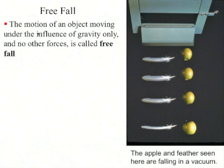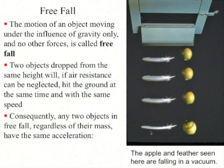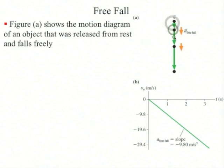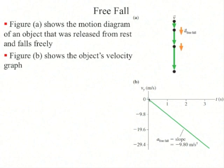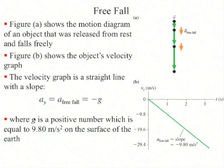The motion of an object under the influence of gravity only is called freefall. Two objects dropped from the same height will, if air resistance is neglected, hit the ground at the same time and with the same speed. There's an image of an apple and a feather falling inside a chamber from which all air has been pumped out, and the motion diagram shows they fall at the same rate. Two objects in freefall, regardless of their mass, always have the same acceleration — 9.8 meters per second squared vertically downwards. The velocity versus time graph for an object released from rest in freefall is a straight line with slope negative g.